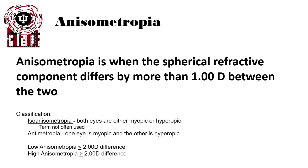Some people also use the term antimetropia, where one eye is myopic and the other is hyperopic. The most important classification is the difference in dioptric value. Low anisometropia is typically classified as under two diopters difference, whereas high anisometropia is over two diopters. This is critical because the two-diopter threshold is the amount of anisometropia the average person can tolerate, and as we increase above that amount, it becomes less tolerable.